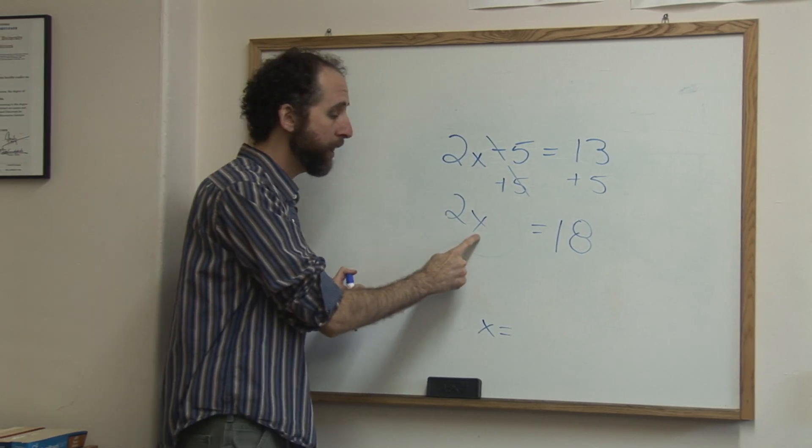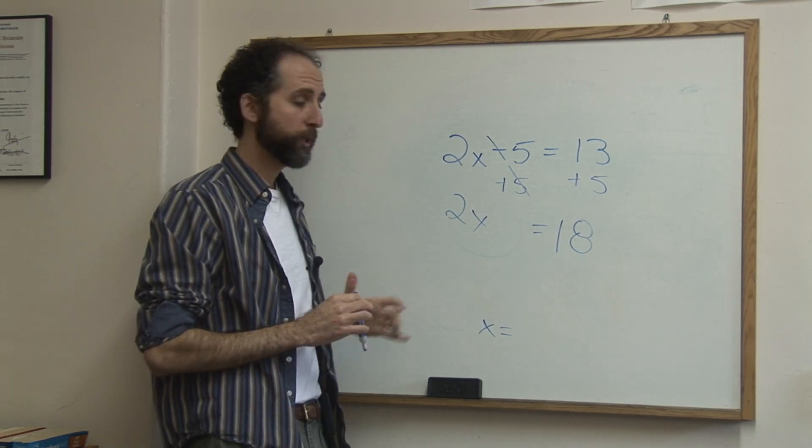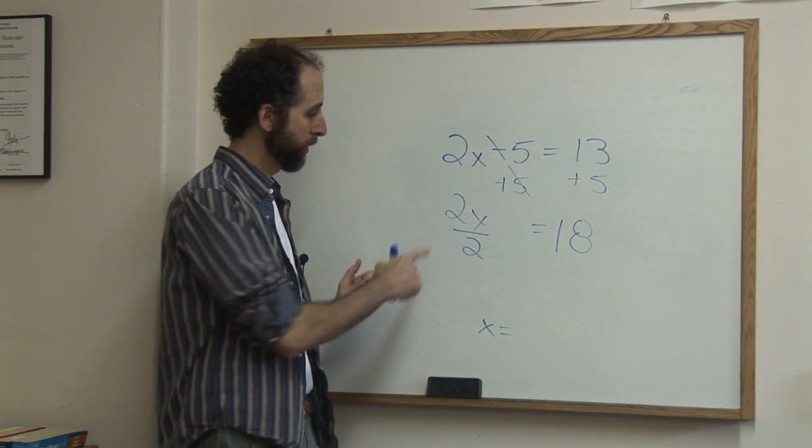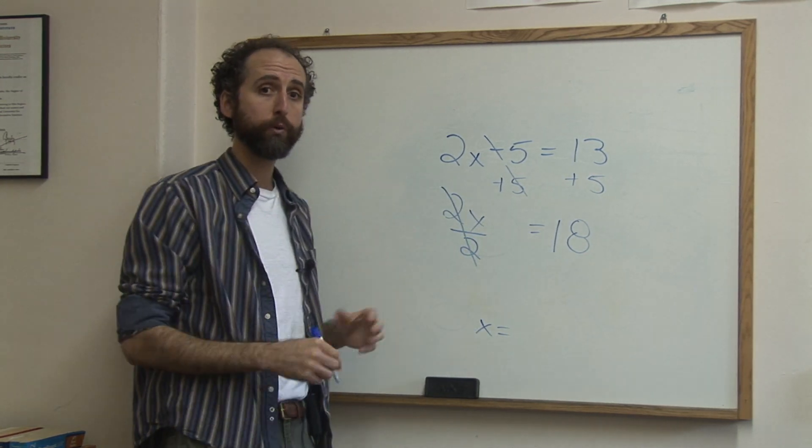So we're going to take 2x, and we're going to divide both sides by 2. 2x divided by 2 cancels to x, that's why we're doing it. But whatever we do to one side, we have to do to the other.